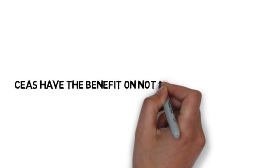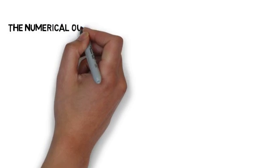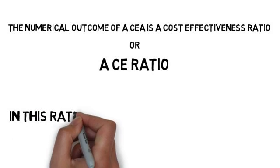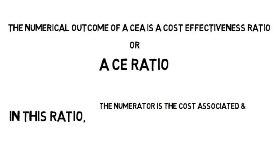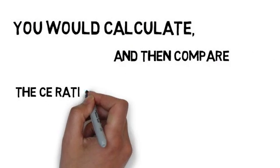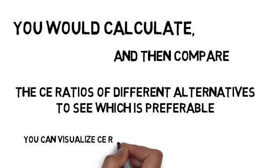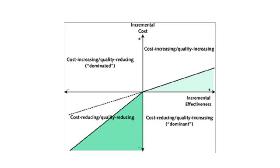CEAs have the benefit of not relying on cost alone. The numerical outcome of a CEA is a cost-effectiveness ratio, or CE ratio. In this ratio, the numerator is the cost associated and the denominator is the units of effectiveness. You would calculate and then compare the CE ratios of different alternatives to see which is preferable. You can visualize CE ratios on a plane with four quadrants, with the Y-axis being incremental cost and the X-axis being incremental effectiveness. Preferred programs will fall into the bottom right quadrant, but most programs will fall into the bottom left and top right quadrants.